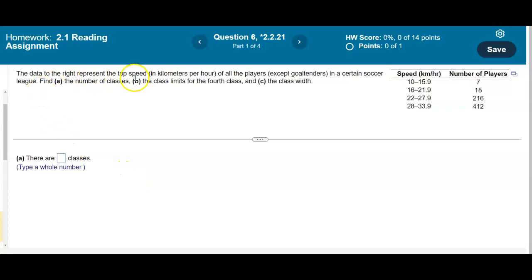The data to the right represent the top speed in kilometers per hour of all players except goaltenders in a certain soccer league. We want to find the number of classes, then the class limits for the fourth class, and the class width.